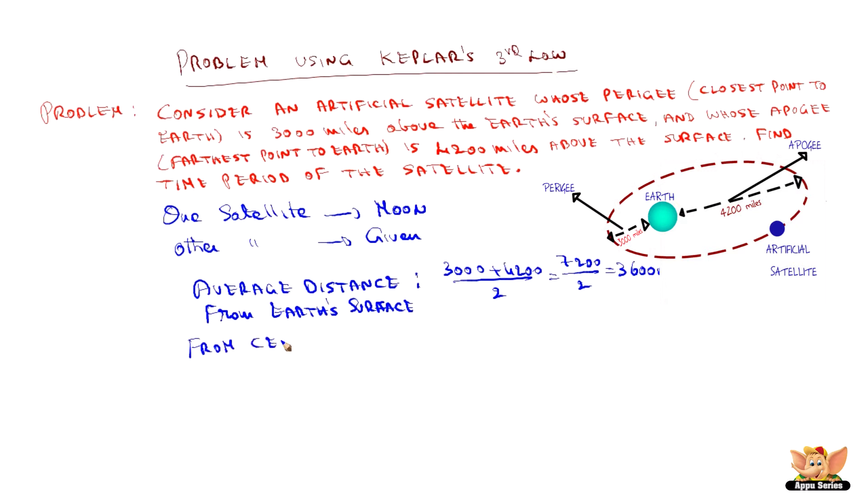Now, from center of the earth, the satellite is at 3600 miles plus the radius, which is 3960 miles, which will amount to 7560 miles. Having known the data, which we will take it as D1. And we know the data of the moon. This is for the satellite.